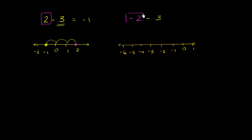But we're starting at negative 2. And then we're subtracting 3 again. So once again, we're going to move 3 to the left of negative 2. So we go 1, 2, 3. We end up at negative 5. So this is negative 5.